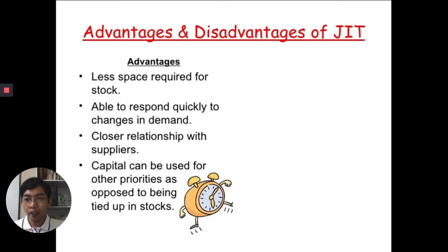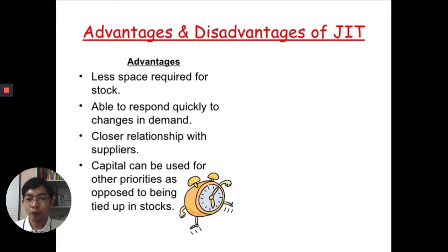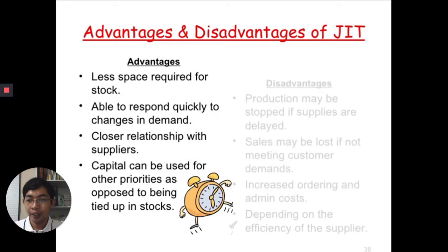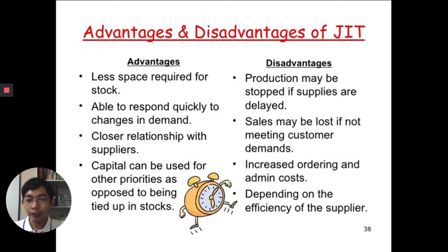What are the advantages and disadvantages of using JIT? The advantages are: number one, less space required for stock; it enables us to respond quickly to changes in demand; a close relationship with suppliers is needed; and capital can be used for other priorities as opposed to being tied up in stocks.